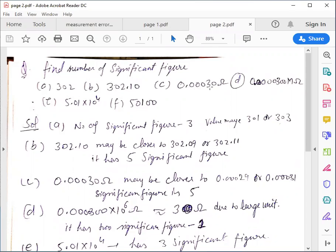part C is 0.0030 ohm and part D is 0.0000300 mega ohm. And in part E, 5.01 × 10^4 and part F is 50100.